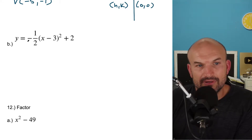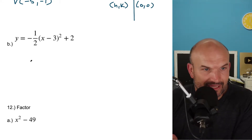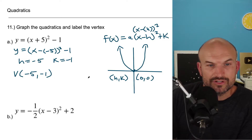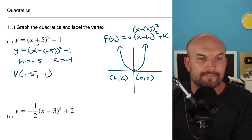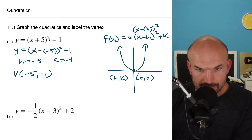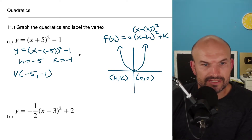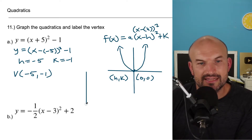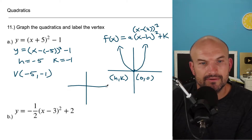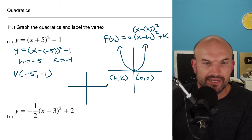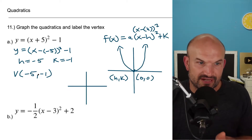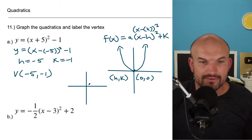In this example, we're basically going to do the exact same thing. I said graph the function. So let's go ahead and do a quick graph. What I'm simply going to do is take this parent graph and shift it five units to the left and then one unit down.